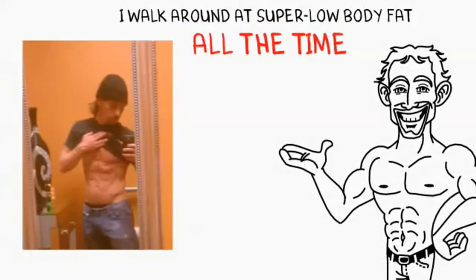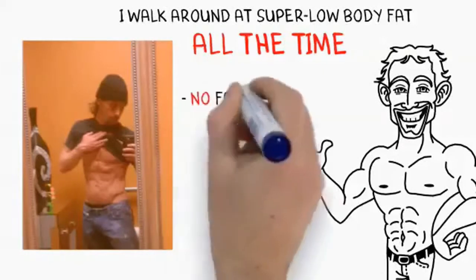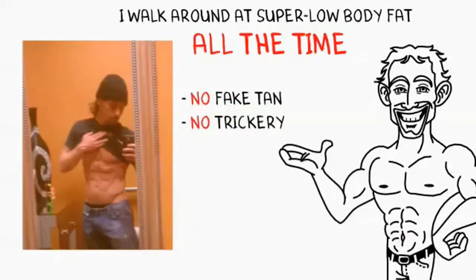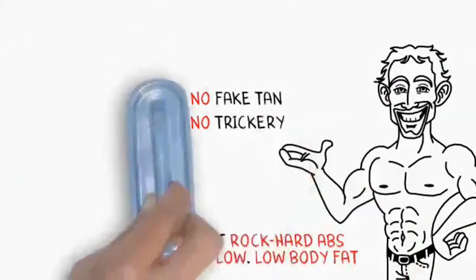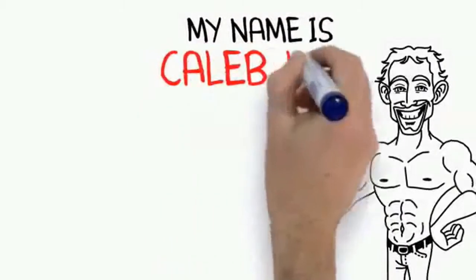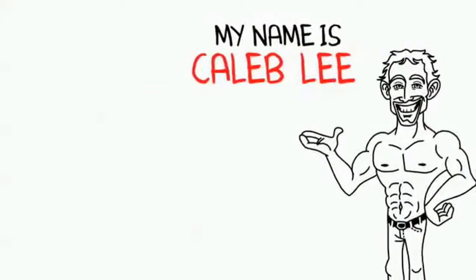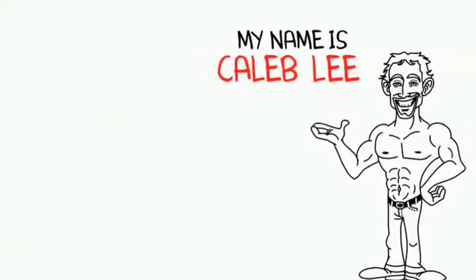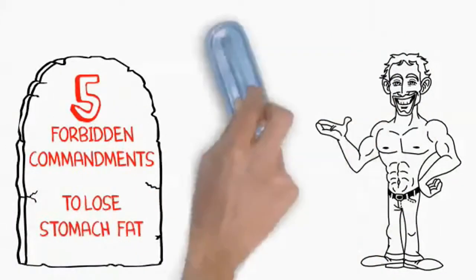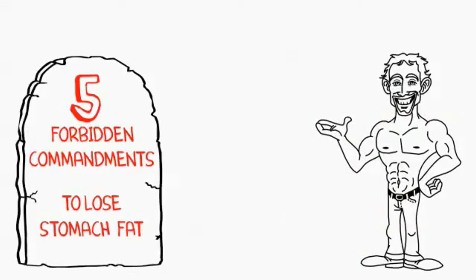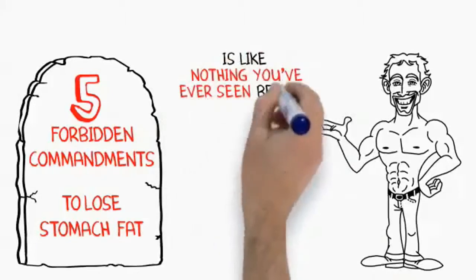In fact, here's a blurry picture I took recently of my cell phone. No fake tan, no trickery, just rock-hard abs and low, low body fat. Now, let me back up a bit. My name is Caleb Lee, and in this short but informative presentation, I'll show you exactly how I achieve such a lean body by religiously following what I call my five forbidding commandments to lose stomach fat. I call these my forbidding commandments because I promise you, what I'm about to reveal is like nothing you've ever seen before.